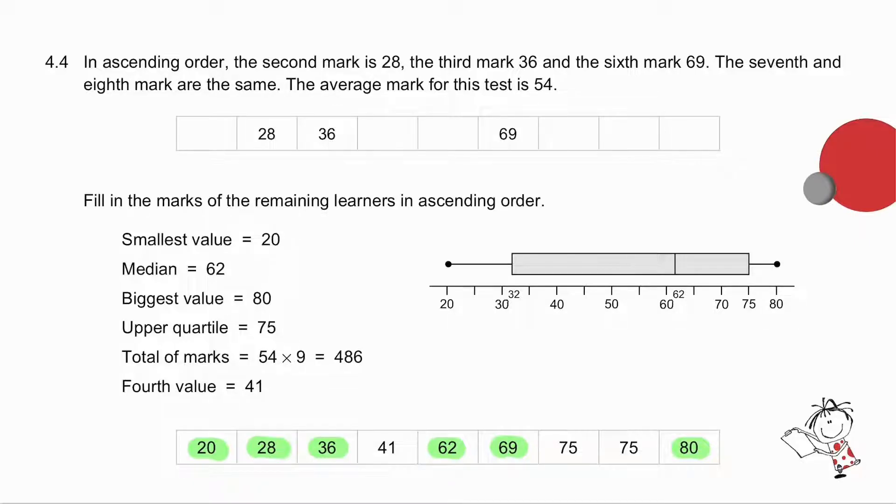They have told me that the upper quartile is 75. Now, the upper quartile is going to be between these two values. So between these two values is 75. But they said to me that the seventh and the eighth values must be the same. In other words, they must both be 75. The last piece of information they give me is that the mean is 54. So the total of the nine marks must be 486. Add up the values we have already and you will realize that that fourth mark has to be 41. And there are the nine numbers.